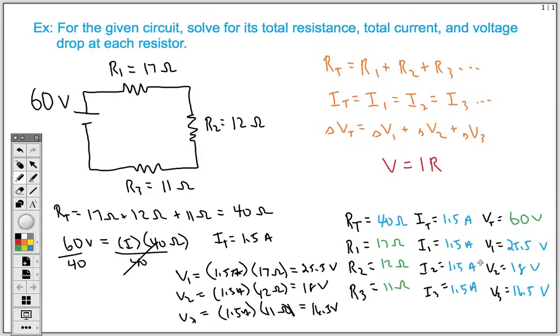So in review, when dealing with these series circuits, we have to keep in mind our three rules for resistance. We add them all up to get the total resistance. For current, the current's the same at every point in the circuit. And we have to add up all of our voltage drops to get the total voltage. We use this in relation to Ohm's law to solve all of our missing values. So hopefully this video was helpful for you in solving your own series circuit problems. Thanks for tuning in.